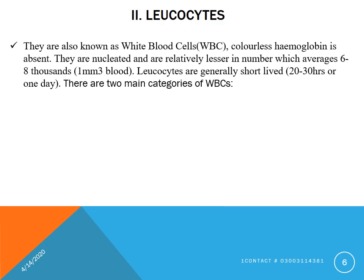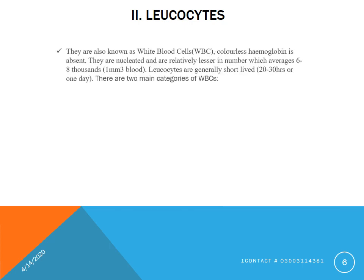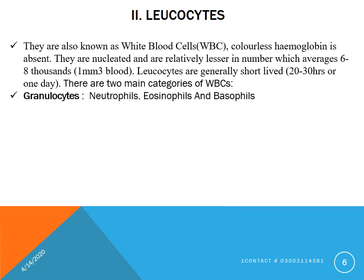The second type of blood corpuscles is leukocytes, known as white blood cells. These are colorless, nucleated cells and relatively lesser in number — about 6,000 to 8,000 per cubic millimeter of blood. Leukocytes are generally short-lived, about 20 to 30 hours. There are two main categories of WBCs. One is granulocytes, also known as polymorphonuclear cells — including neutrophils, eosinophils, and basophils. Neutrophils are named on the basis of neutral stain, eosinophils on acidic stain, and basophils on basic stain.